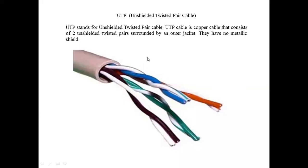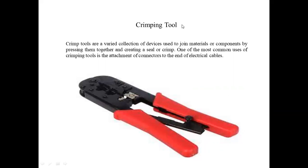Next we have the crimping tool. Crimp tools or a crimping tool are a varied collection of devices used to join materials or components by pressing them together and creating a seal or crimp. Whenever we want to crimp a wire along with some connectors, we use the crimping tool. Basically, when we want to uncover the main wire or crimp wires onto a particular device, we require this crimping tool.